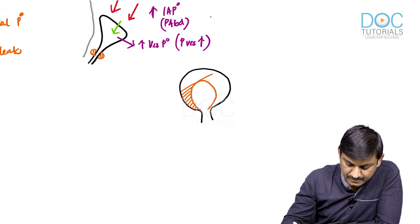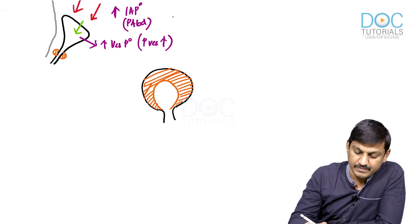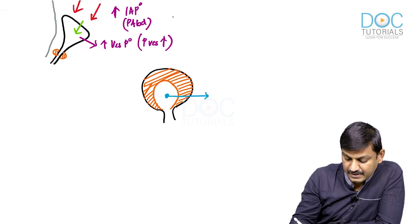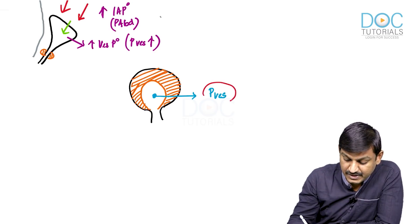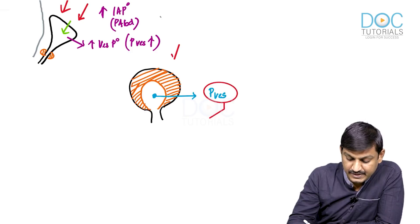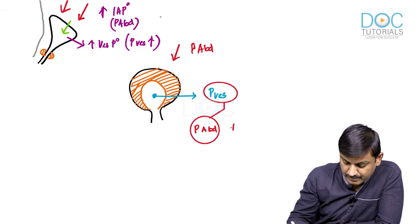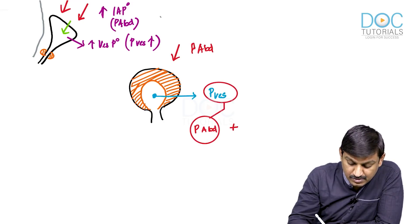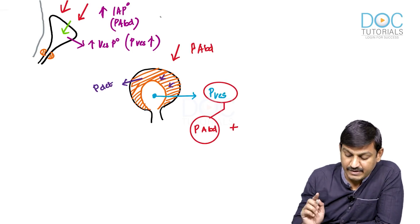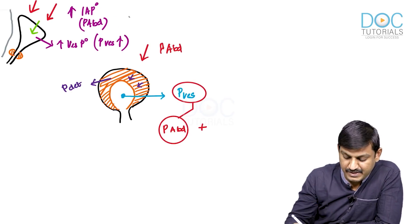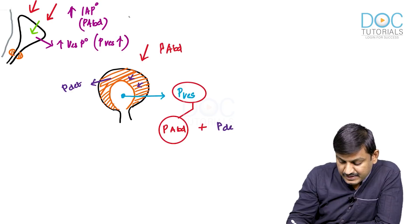The muscle layer of the bladder is called the detrusors. Any pressure inside the vesicle is called vesical pressure, or P-ves. This pressure is contributed by two factors: one is the pressure from the outside, that is the abdominal pressure (P-abdominal), plus there is also some intrinsic pressure — the detrusor muscle will contract and produce a detrusor pressure, which is generated from within the bladder. This point is important and will be discussed in more detail when we go into urodynamic studies.